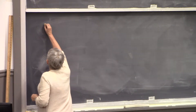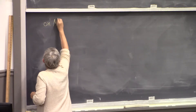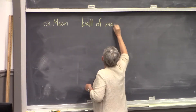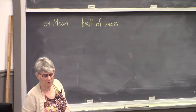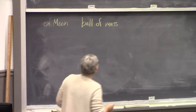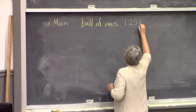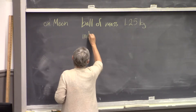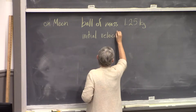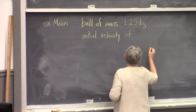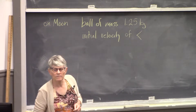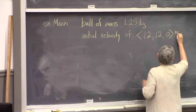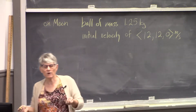So let's take a ball on the moon. We have a ball of mass 1.25 kilograms. We kick it with an initial velocity of 12 meters per second in the x direction, 12 meters per second in the y direction, and zero in the z direction. And we want to find out where it is after one second.